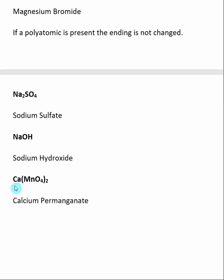Here calcium is a metal, so we use the name of the metal, calcium, plus the name of the polyatomic. Here the polyatomic is permanganate. So the name of this molecular formula is calcium permanganate.